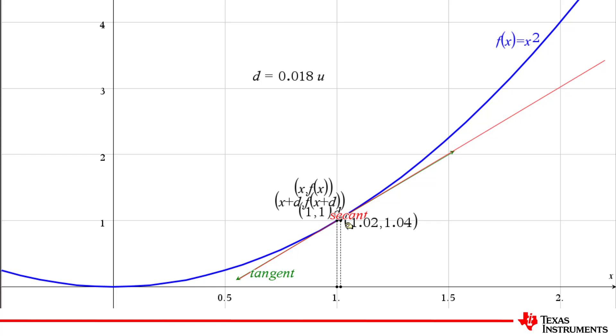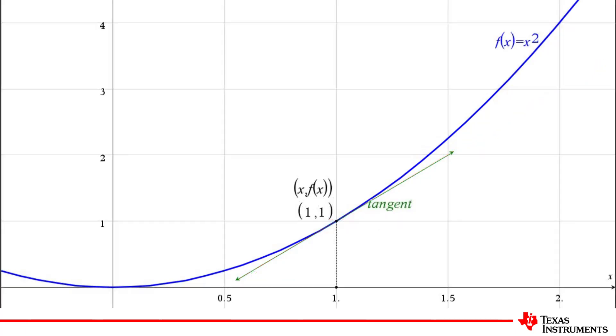We can't make d equal zero, as this would result in a division by zero. So, we let d approach zero. And we see that just like the polygon and circle example, our gradient is approaching a limit. The gradient at the point on the curve.